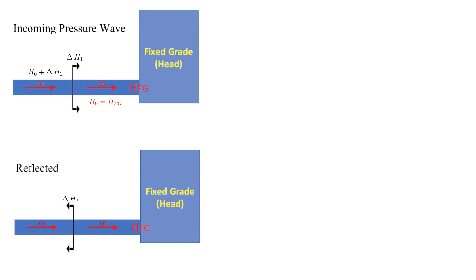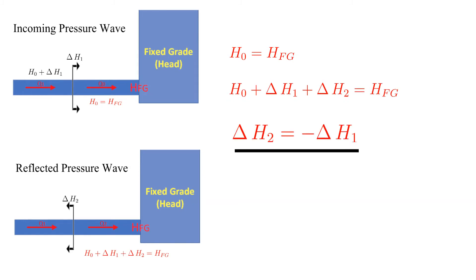Now let's put it all together. Since the head adjacent to the tank remains constant, the reflective wave, delta H2, must be equal in magnitude but of opposite sign as the incoming wave, delta H1. In other words, waves reflect negatively off of a large tank or fixed grade.